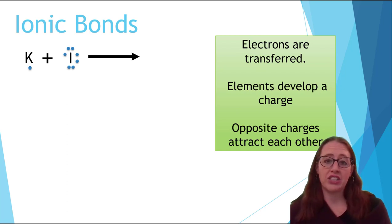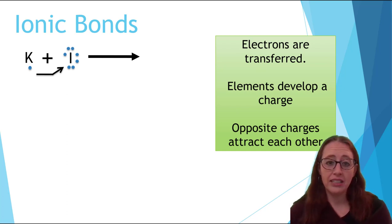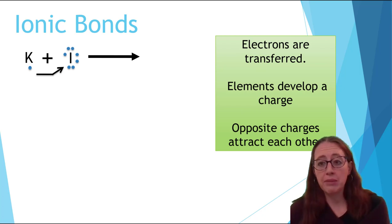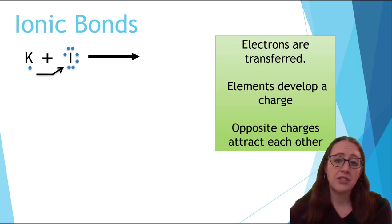Iodine has seven electrons in its valence shell. So if we were to add an electron to its outside shell, it would have a full octet. Therefore, it's favorable for the one potassium electron to be transferred to the iodine shell.